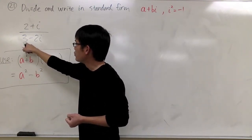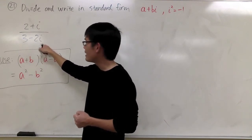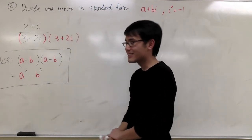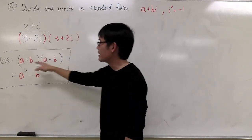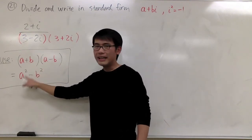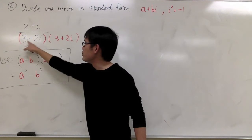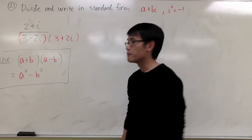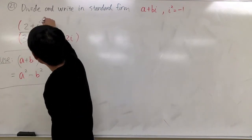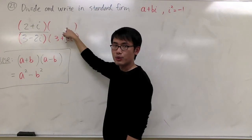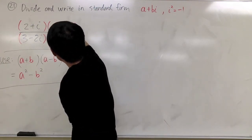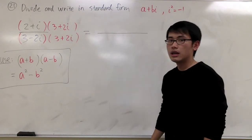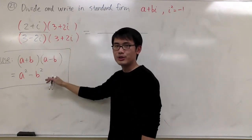Right here, when you have 3 minus 2i, we are going to multiply by 3 plus 2i. Once again, the denominator is the one we have to take care of. With a proper fraction, you also need to multiply that on the top as well, 3 plus 2i on the top. Let's multiply this out to see what we get. Let's work out the bottom first, because we can just use this formula.